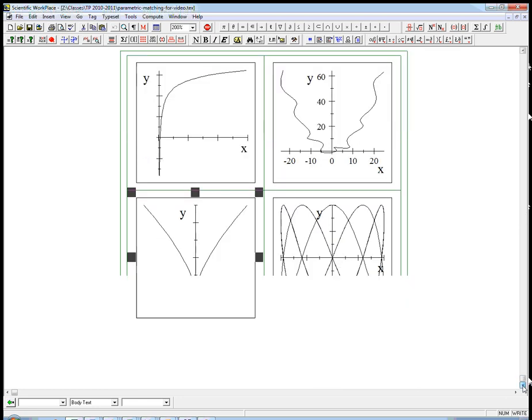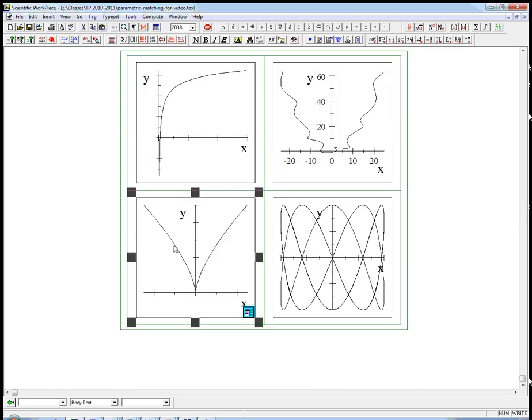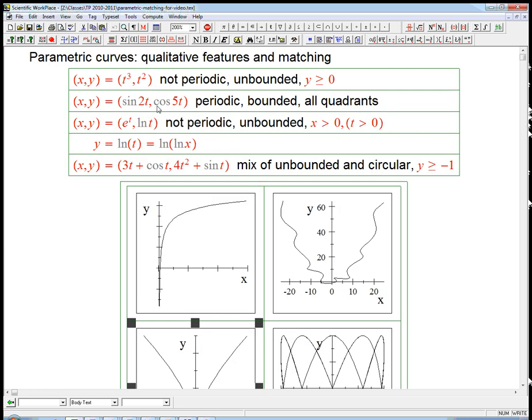I'd say this is probably the next most simple. Here, we can see that y is always non-negative, but x is both signs. It doesn't look like it's trying to be bounded, although it's hard to tell from a finite graph. But it certainly is not periodic. It's not coming back or repeating. So it looks like it's going to match the t cubed, t squared.